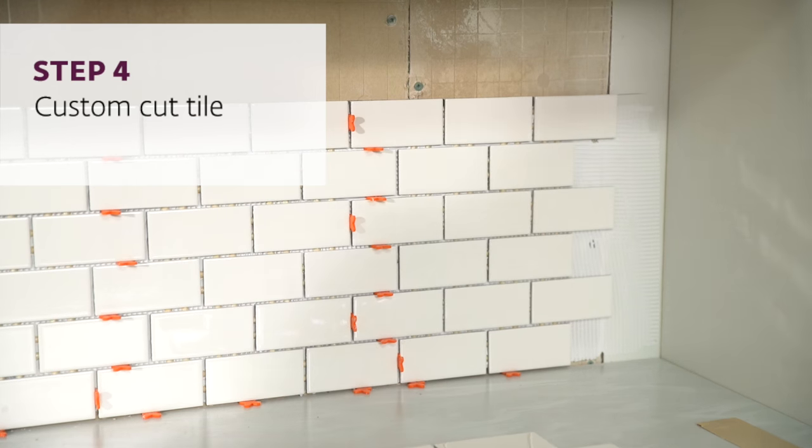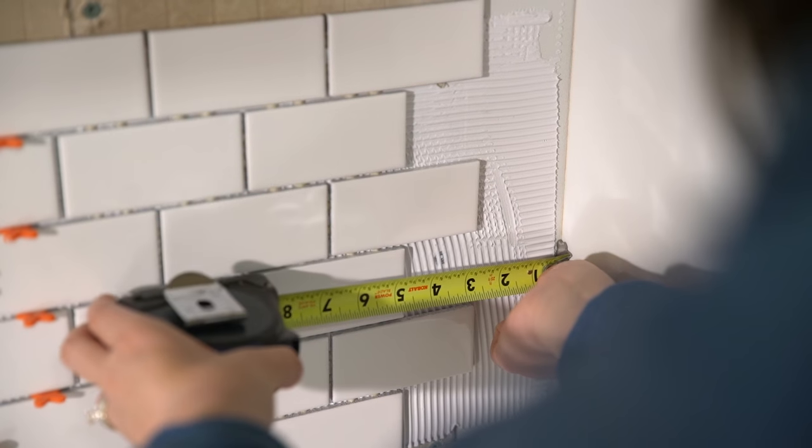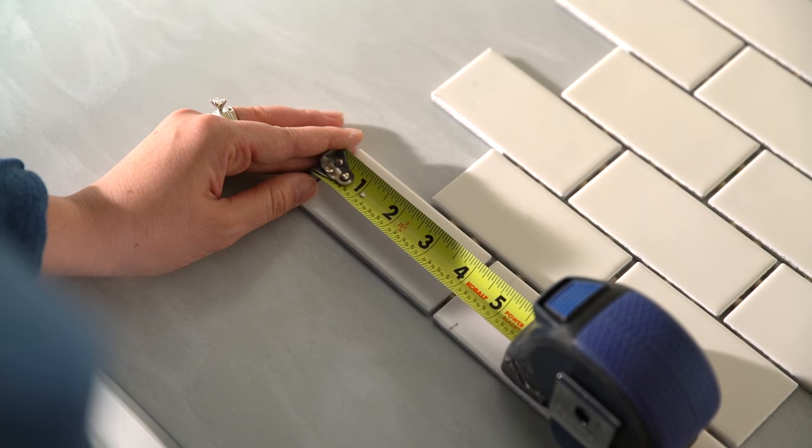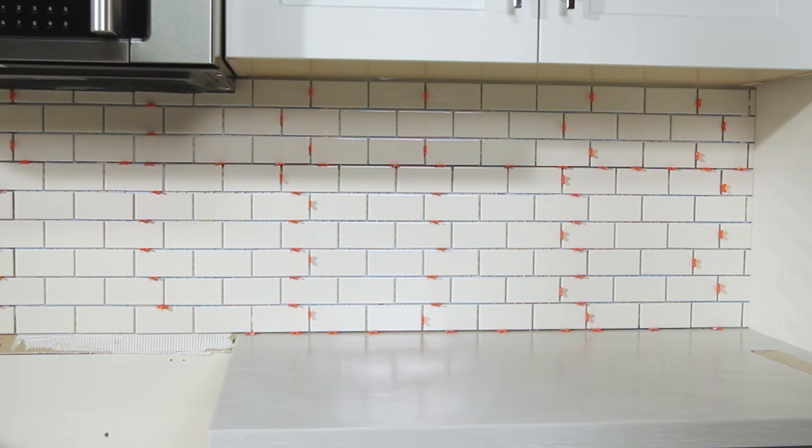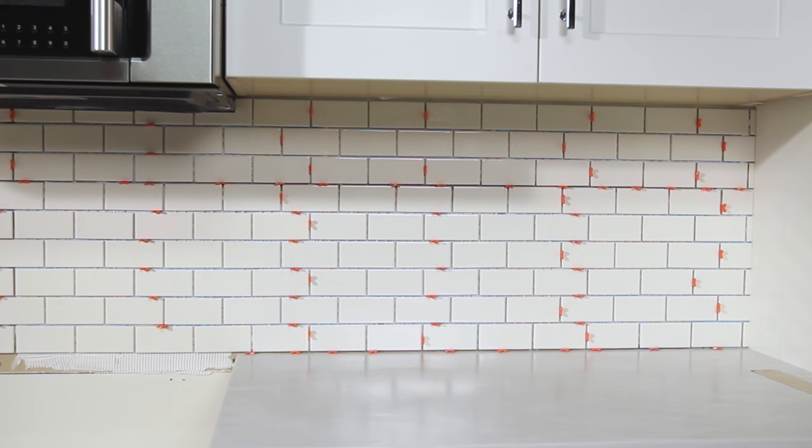When you come to a spot that needs a custom cut, measure where the cut should go, mark it, then use a wet tile saw to cut the tile to size. Let your tiles dry overnight before grouting.